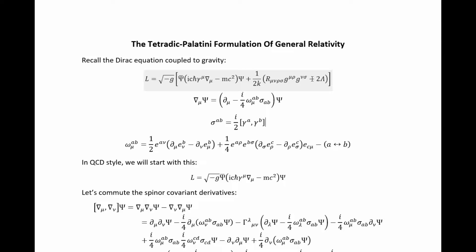We could just substitute the formula for the curved metric in terms of the tetrad and be done with it, but that isn't very instructive. We're going to derive it using the technique that's usually used to derive QCD. The only difference is that the symmetry group is not SU(3), it's GL(4). We're going to prove that you can derive a formulation of general relativity — specifically the Tetradic-Palatini formulation — just like QCD, where all you have is a different symmetry group. The idea is to convey that fundamentally, the only truly meaningful difference between general relativity and other gauge theories is that we're using a different gauge group.